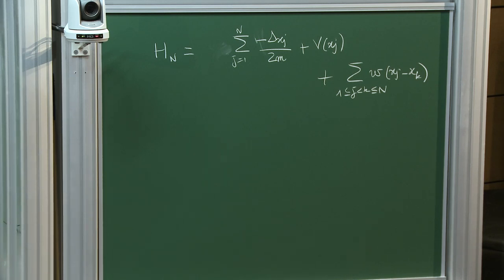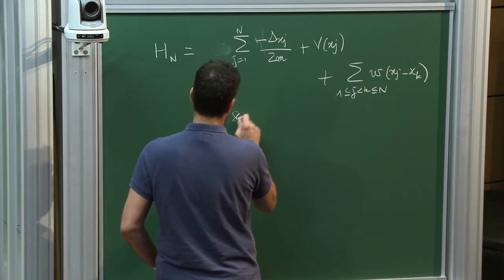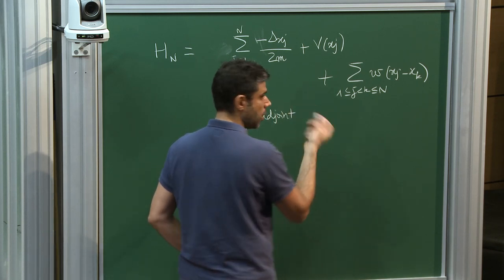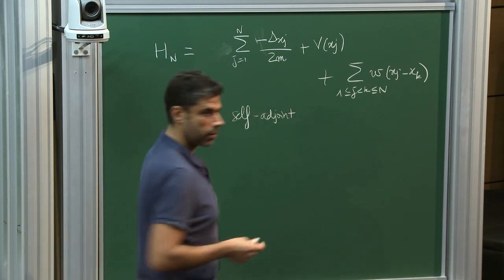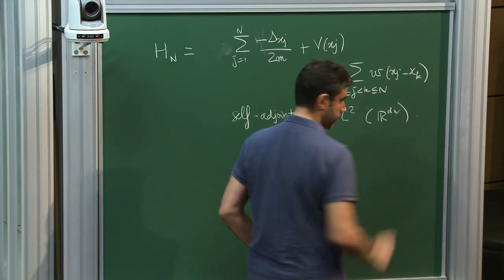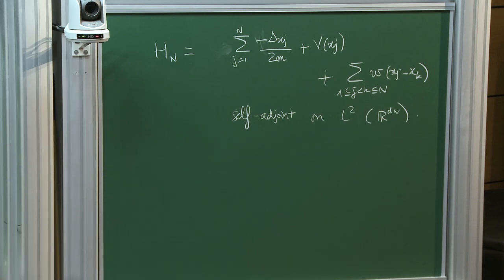You see that your energy, which was a function on phase space, is now an operator. This operator is self-adjoint — to make sure it's self-adjoint one has to add assumptions — on L²(R^{dN}). This operator becomes the main object of interest when you want to study the large N limit of quantum systems.